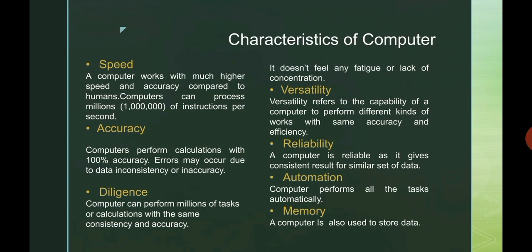Next is automation. Computers perform all tasks automatically. And the last is memory. A computer is also used to store data and information. There are two kinds of memory.